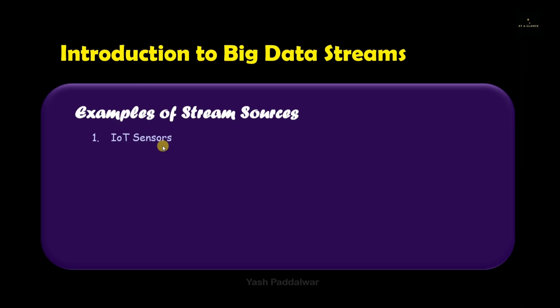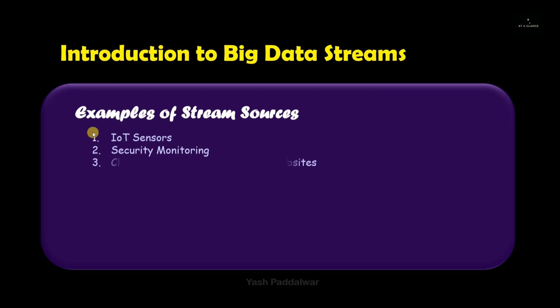The next example of a stream source is security monitoring. For monitoring security we require real-time data. We can fetch this data from different automated applications using deep learning algorithms. Through this we can detect the motion of objects at a particular area and collect real-time data which is used to monitor security — making it one of the important stream sources.